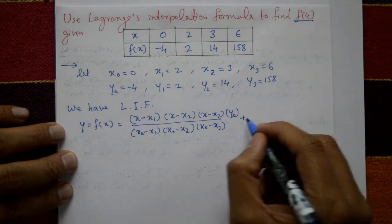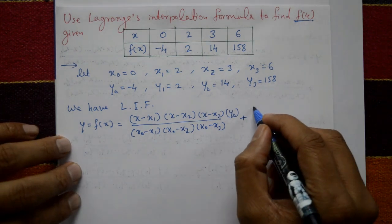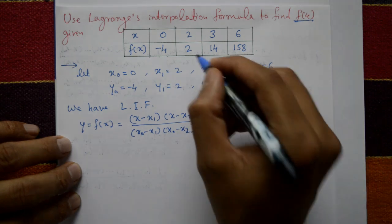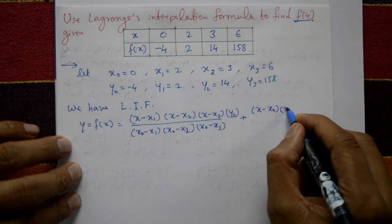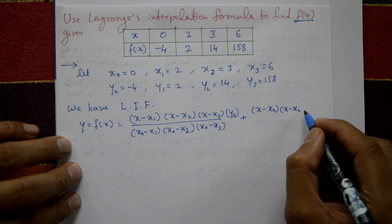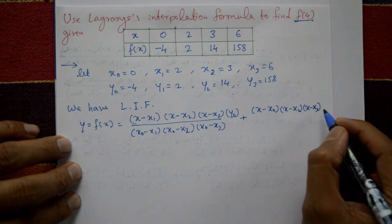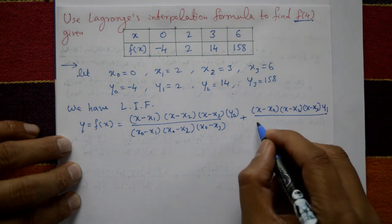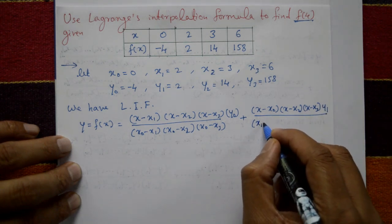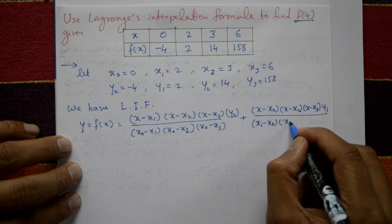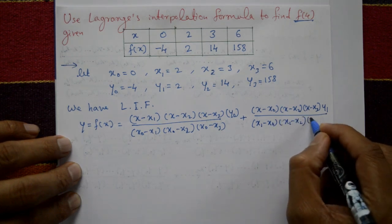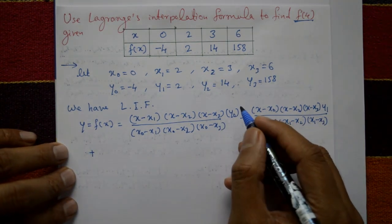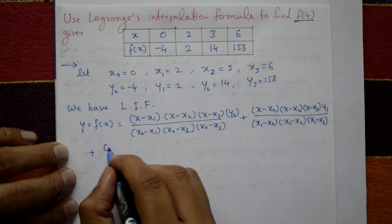Plus the second term: [(x − x₀)(x − x₂)(x − x₃)] divided by [(x₁ − x₀)(x₁ − x₂)(x₁ − x₃)] into y₁. Here x₁ is excluded from the numerator and included in the denominator.